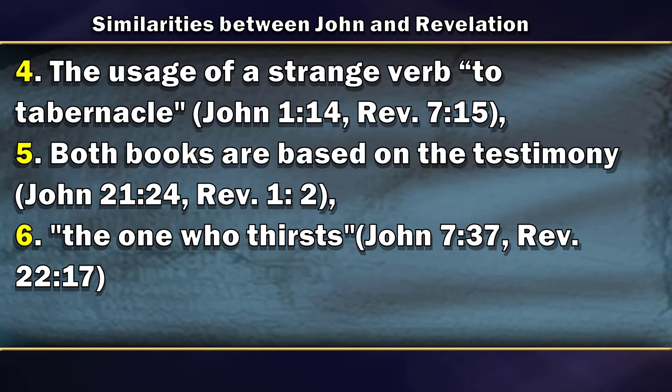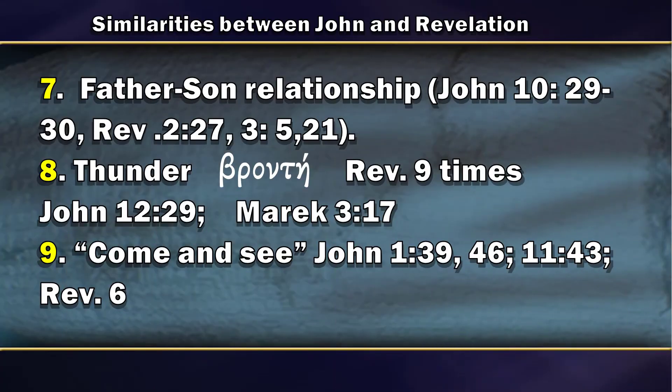Number six: the one who thirsts is underlined in the Gospel of John as well as in Revelation. In the Synoptic Gospels, when people come to Christ they hunger, but in the Gospel of John and Revelation they come because they thirst — the emphasis is placed on a water and human relationship. Number seven: the Father and Son relationship is heavily underlined in both books, stressing this idea because of the work of Christ and his reliance upon his Father. The word thunder, Bronte, occurs nine times in Revelation and also in the Gospel of John.